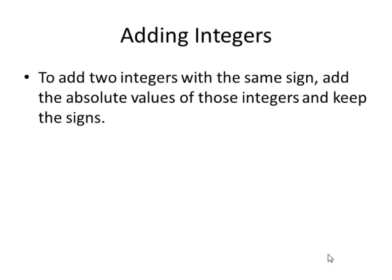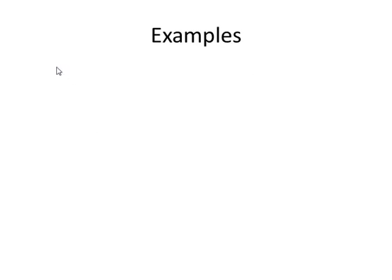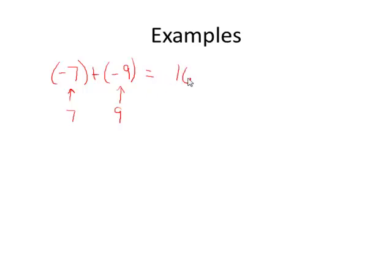The first topic in this section is about adding integers. If you have two integers that you want to add and they have the same sign, you simply add the absolute values of those integers and keep the sign. For instance, let's say we were trying to add negative 7 plus negative 9. The absolute value of negative 7 is 7, and the absolute value of negative 9 is 9. Because these have the same sign, we add the absolute values, which gives 16, and then we keep the sign that the two share. So the sum is negative 16.